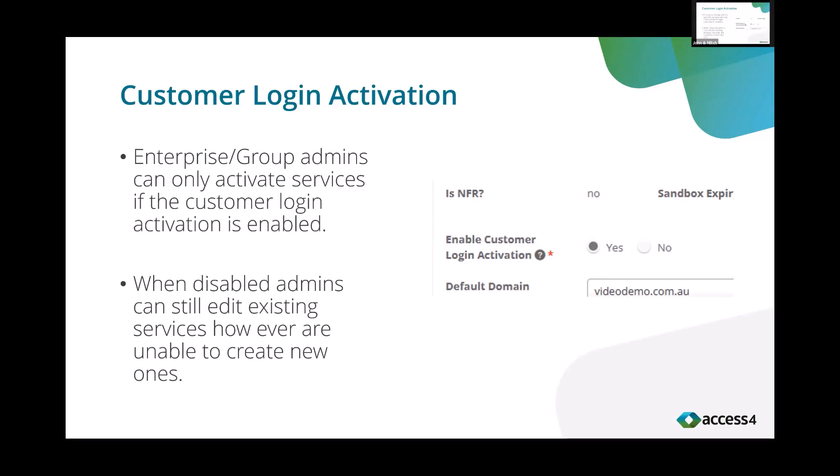The last major release we've done is customer login activations. It gives you the ability to set whether or not a customer with a login to SaasBoss, as an enterprise admin or a group admin, would be able to create their own users. This could be really useful — you may not want to provide that access to them. You can enable or disable this on an enterprise level. We are looking at doing it on a user level as well, but at the moment it is purely on an enterprise level.